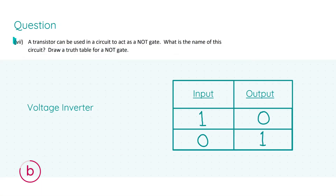For the final part, part seven, we're told a transistor can be used in a circuit to act as a NOT gate. We're asked to name the circuit and draw a truth table for this NOT gate. A NOT gate is one of the three logic gates studied in Leaving Certificate applied electricity. A logic gate is an electronic circuit with an input and an output, where the output voltage depends on the input voltage in a definite manner.